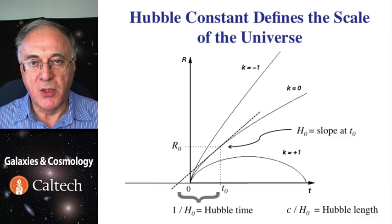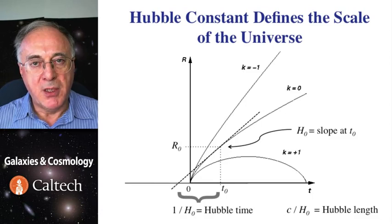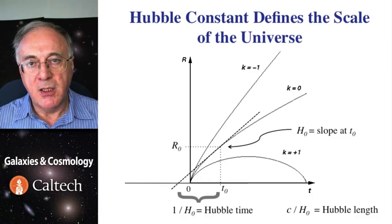This is close to, but does not have to be equal to, the age of the universe at that time, t0. If you multiply Hubble time by the speed of light, which is length over time, then you get a Hubble length.